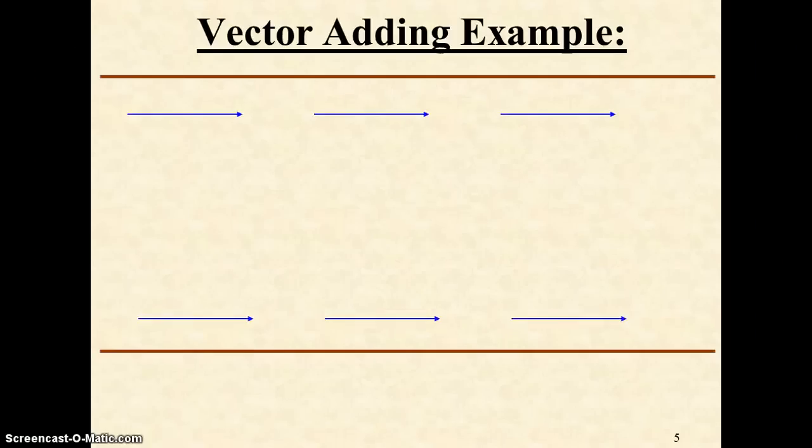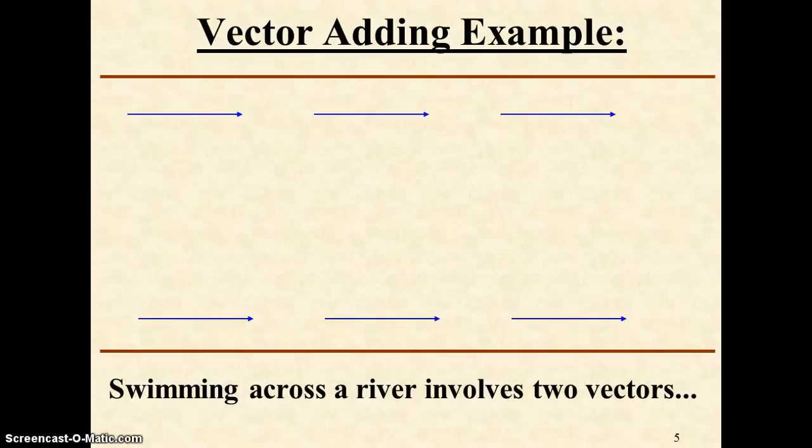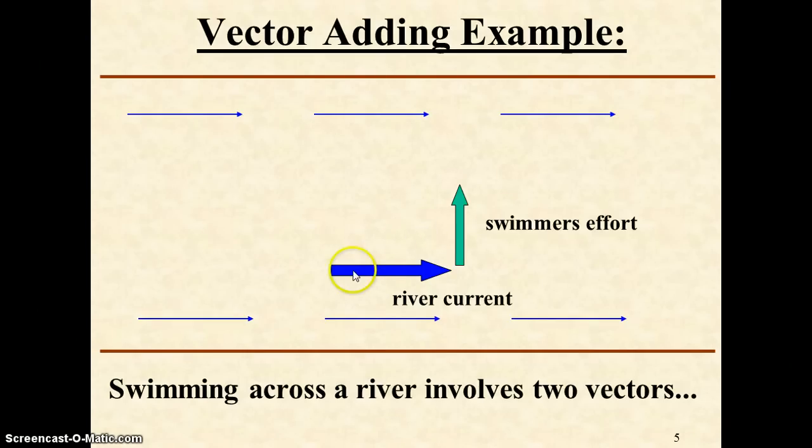However, it gets more complicated when our vectors are not parallel to each other. As an example, we have a river flowing to the right and someone trying to swim straight across. In that case, we have two velocities to add: one to the right, the other straight upward. Using the head-to-tail method, notice the addition of these two vectors is shown by this red resultant. Notice the geometry: we get a right triangle with two legs and the hypotenuse.